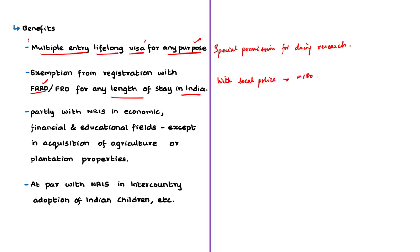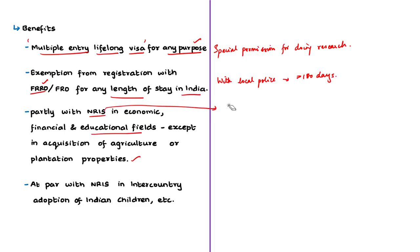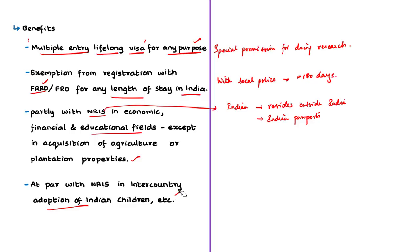OCI cardholders enjoy parity with non-resident Indians in respect of all facilities available in economic, financial, and educational fields, except in matters related to the acquisition of agricultural or plantation properties. A non-resident Indian (NRI) is an Indian citizen who is ordinarily residing outside India but holds an Indian passport. OCI cardholders are also treated on par with NRIs in matters of inter-country adoption of Indian children.